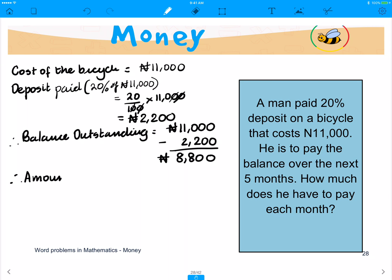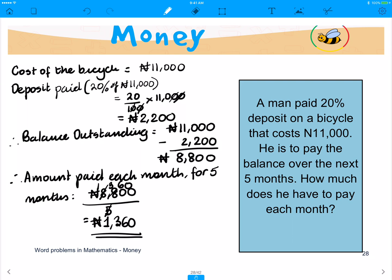Therefore, the amount paid each month for 5 months would be 8,800 Naira divided by 5, which would give us 1,360 Naira.